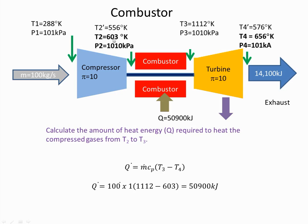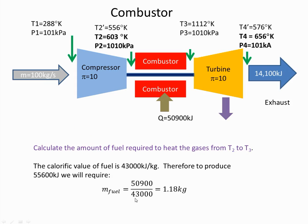I can heat the gas from 603 degrees Kelvin to 1112 degrees Kelvin, and when I do that I get 50,900 kJ of energy. If the heating value of the fuel is 43,000 and we need 50,900, that means the mass of the fuel required is 1.18 kgs.